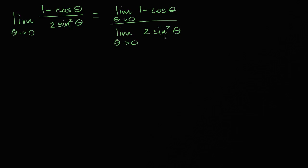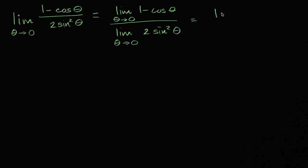Now, both of these expressions, which could be used to define a function, they'd be continuous if you graph them — they'd be continuous at theta equals zero. So the limit is going to be the same thing as just evaluating them at theta equals zero. So this is going to be equal to one minus cosine of zero, over two sine squared of zero.